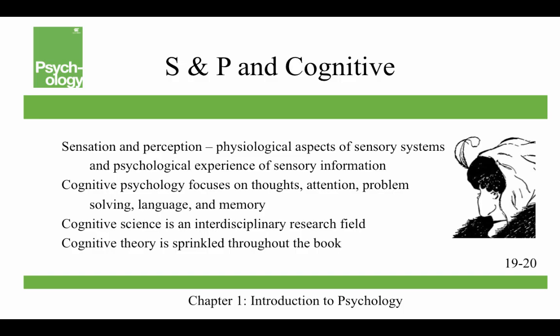Sensation and perception looks at the physiological aspects of sensory systems and the psychological experience of sensory information. In the figure shown, you can see either an old woman or a young girl — and your age is actually predictive of what you'll see: older people tend to see the old woman, younger people the young girl. Cognitive psychology focuses on thoughts, attention, problem-solving, language, and memory. I teach cognitive science, which is considered an interdisciplinary research field. Some of my students say I teach cognitive science fiction — I call it cognitive science inevitability. Cognitive theory is sprinkled throughout the textbook and we'll revisit it as we go.